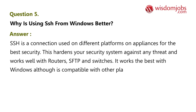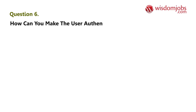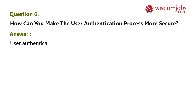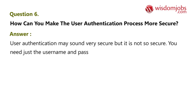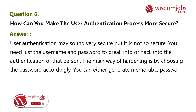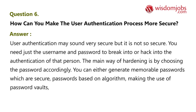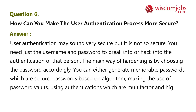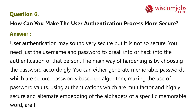Question six: how can you make the user authentication process more secure? Answer: user authentication may sound very secure but it is not. You need just the username and password to hack into the authentication of a person. The main ways of hardening include choosing passwords based on algorithms, using password vaults, using multi-factor authentication, and alternate embedding of alphabets of a specific memorable word.